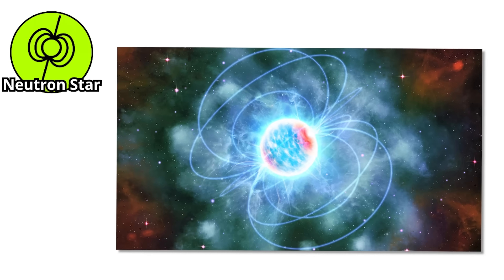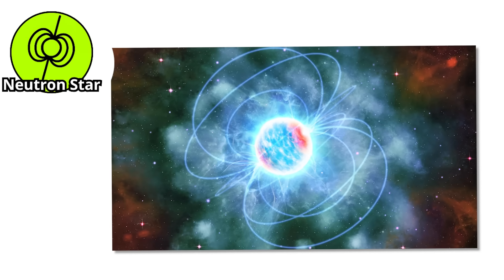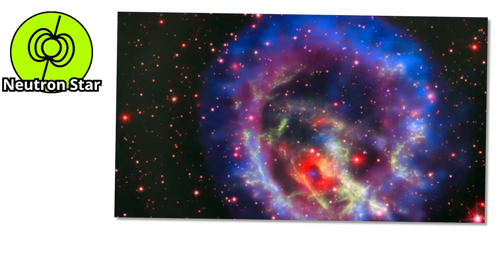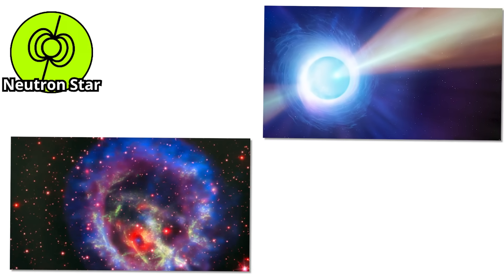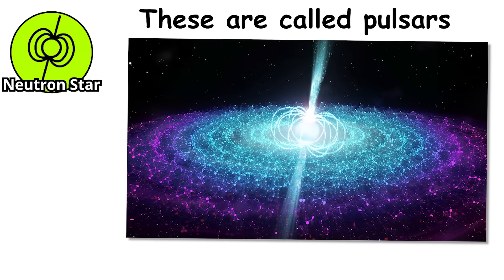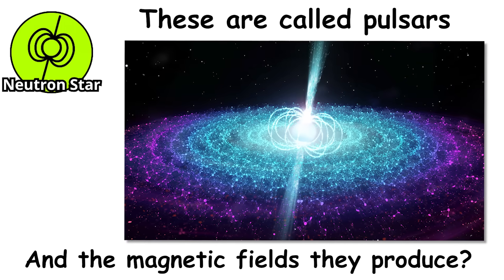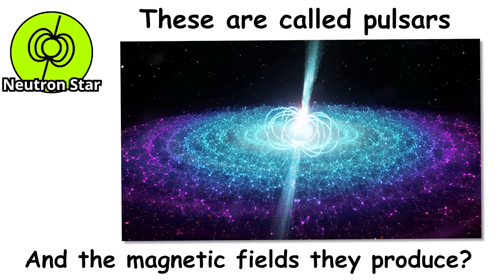Neutron stars are also extreme in every other way. They spin incredibly fast. Some rotate hundreds of times per second, sending out pulses of radiation like cosmic lighthouses. These are called pulsars. And the magnetic fields they produce? Millions of times stronger than anything we can make on Earth.